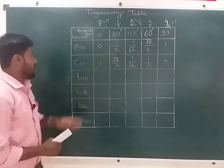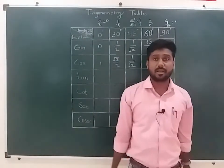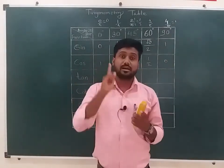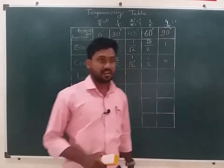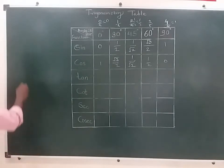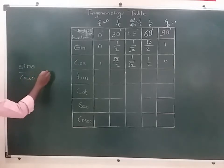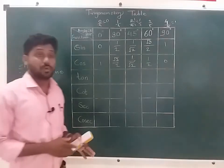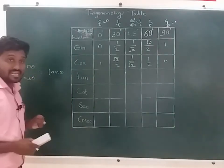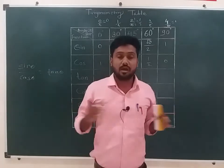Now, we have sine and cosine. We have the tangent standard formula. What is the tangent standard formula? Tangent is equal to sin theta upon cos theta. Sin theta upon cos theta — only sin theta upon cos.